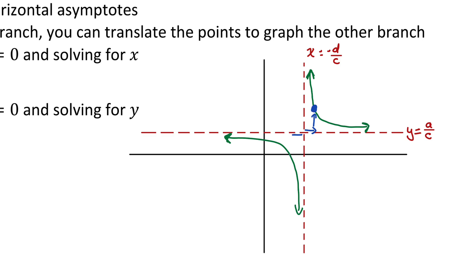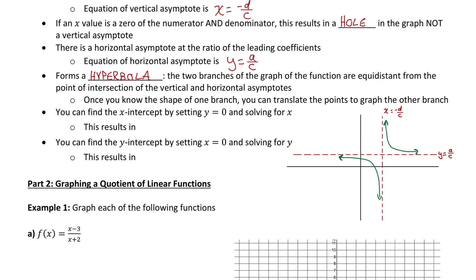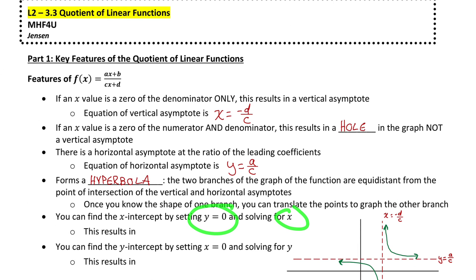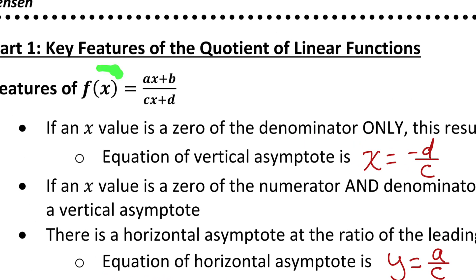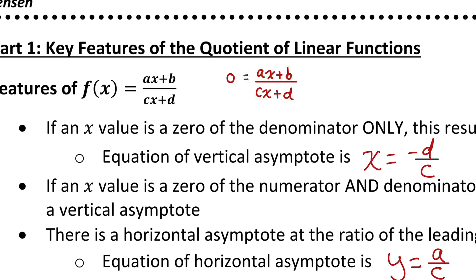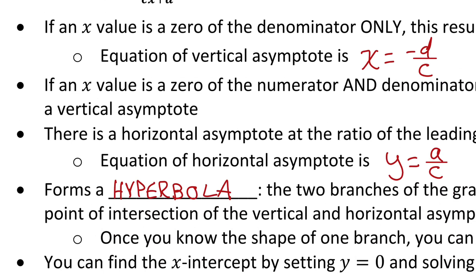Now let's talk about how we can find the x and y intercepts of a hyperbola. We find the x-intercept by setting y equal to zero and solving for x. A fraction is zero if the top of the fraction is zero, so we just set the numerator equal to zero. Solving for x, we see that x equals negative b over a. So the x-intercept is at the point negative b over a, zero.